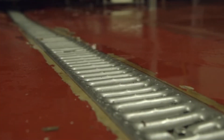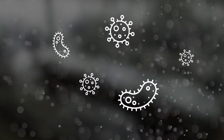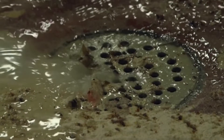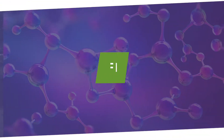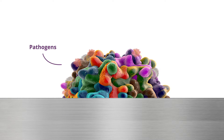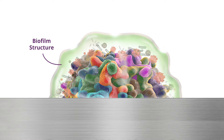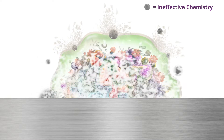Drains are a collection point for all environmental pathogens and pose a major cross-contamination risk in food processing environments. Ideal conditions in drains encourage the growth of microorganisms and the biofilm that protects them. Biofilm is the natural habitat for microorganisms and creates an environment where they are resistant to many types of chemical threats. Ineffective chemical treatment or lack of mechanical action leads to the survival of organisms, creating a continued risk.